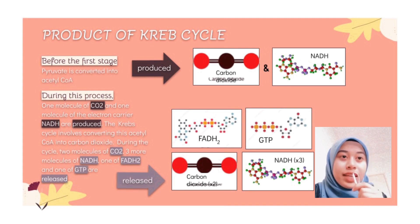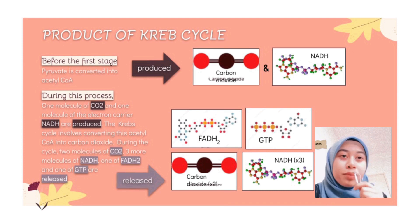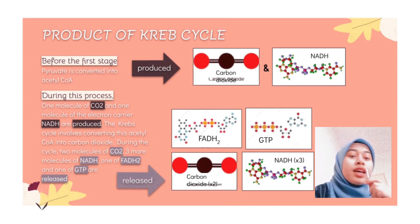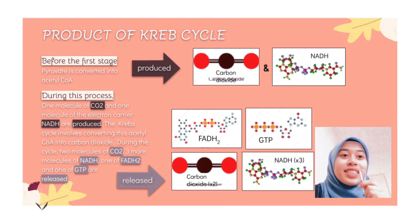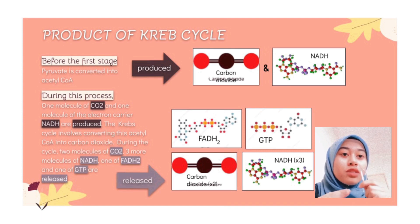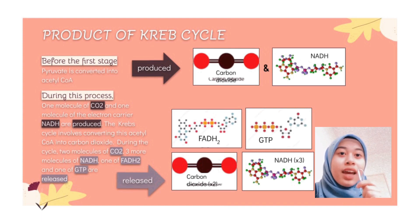Carbon dioxide is the only waste product and must be removed from the cell. Large organisms must remove carbon dioxide from all their cells. In animals, carbon dioxide is typically exchanged in the gills or lungs for oxygen, which then helps drive the final stages of aerobic respiration.